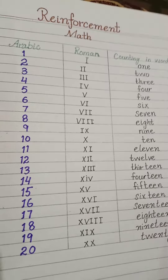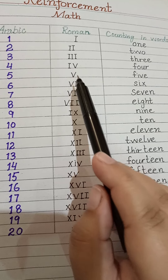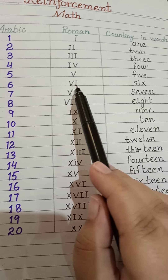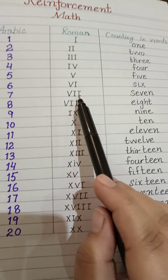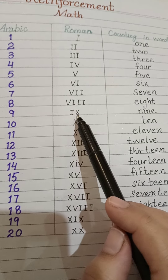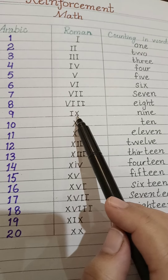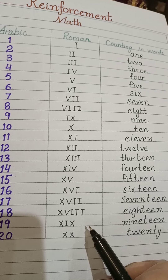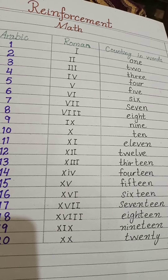Now let's count from 1 to 20: 1, 2, 3, 4, 5, 6, 7, 8, 9, 10, 11, 12, 13, 14, 15, 16, 17, 18, 19, and 20.